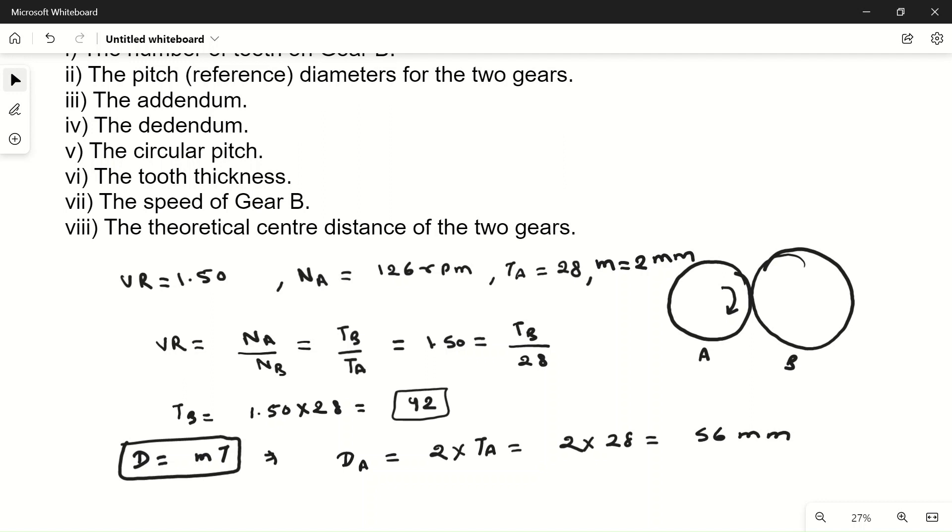Diameter of gear B is module into number of teeth on gear B, which is 2 into 42, which is equal to 84 mm. So DA is 56 and DB is 84 mm.